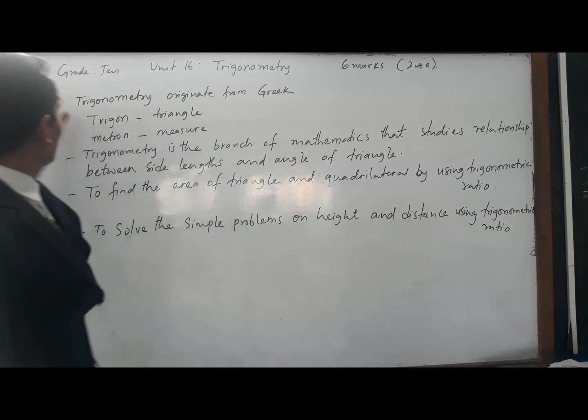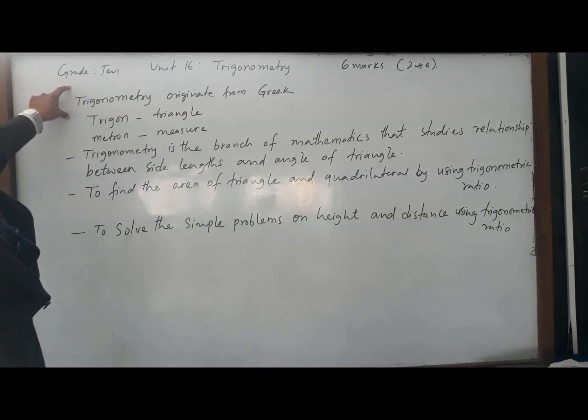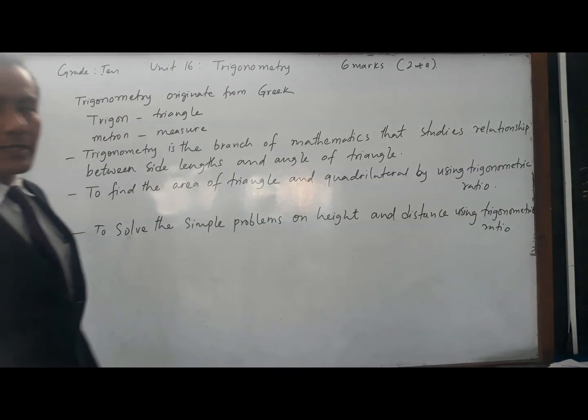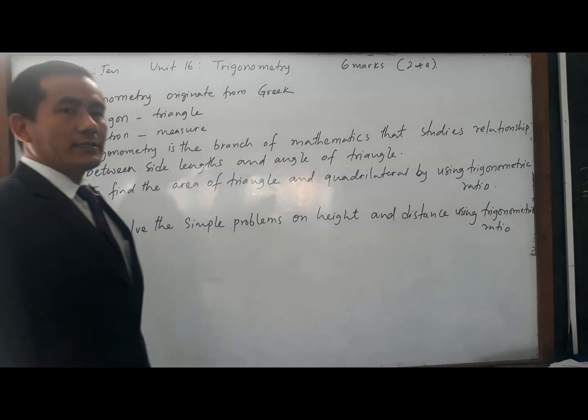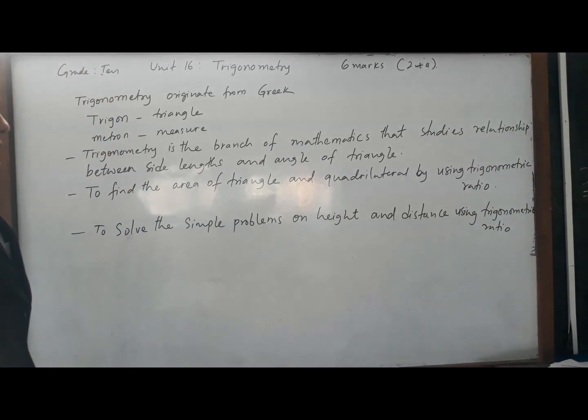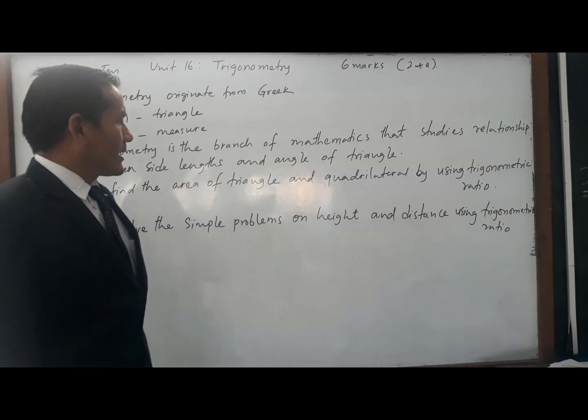First of all, I want to teach you that trigonometry originated from Greek. Trigonometry has two words: trigon, which means triangle, and metron, which means measure. That means trigonometry is the branch of mathematics that studies the relationship between side lengths and angles of a triangle.